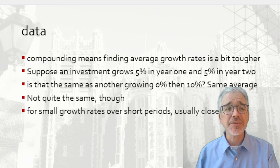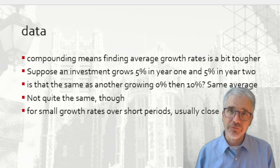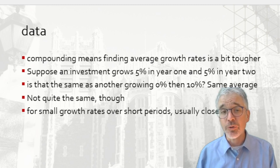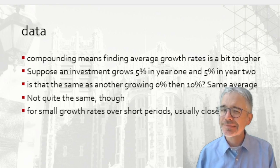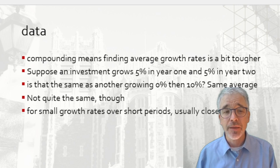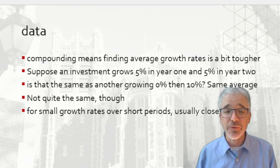Consider a simple example. One investment grows by 5% in year one, then 5% in year two, so it averages 5%. Another investment grows by 0% in year one, then 10% in year two — the same average. Are those two investments equal at the end of two years? Not quite. $100 in the second investment stays at $100 after year one, then grows 10% to $110. Whereas $100 growing at 5% reaches $105 after year one, then $110.25 after year two — a small extra from compounding. Not a lot, but not quite equal.